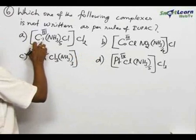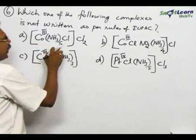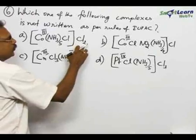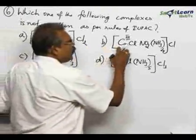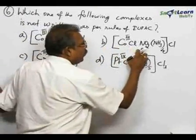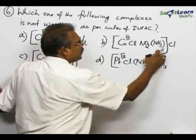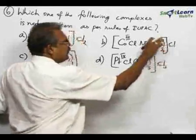So A, that is cobalt NH3 5 Cl, that is within bracket and outside Cl2. B, cobalt, then Cl, NO2, NH3 4 times, then square bracket over, outside Cl is there.